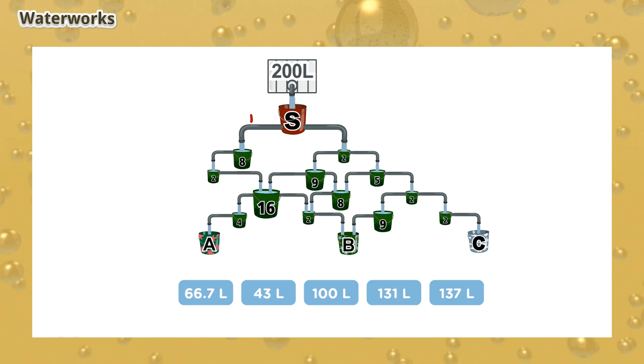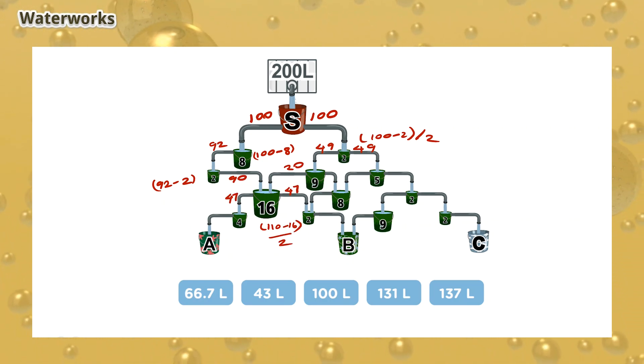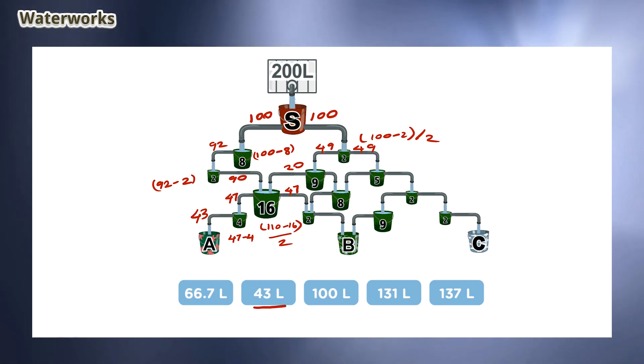Let's complete the waterfall diagram. As you can see, bucket A will have 43 litres of water at the end. This means that the answer is 43 litres.